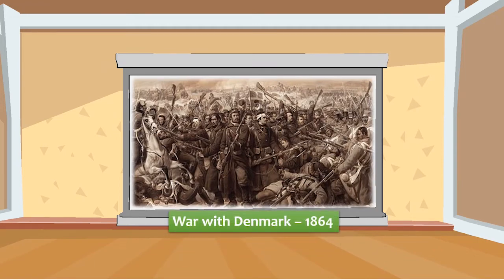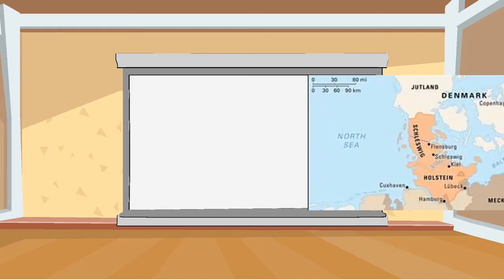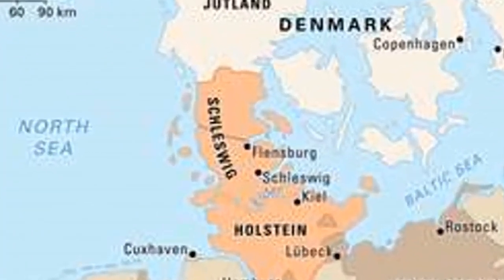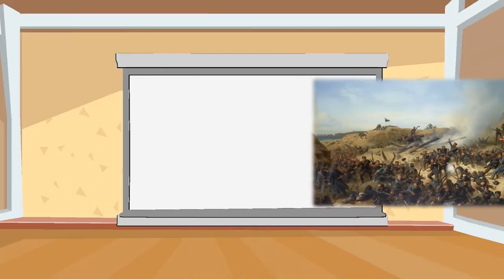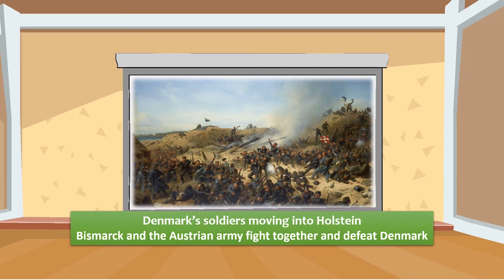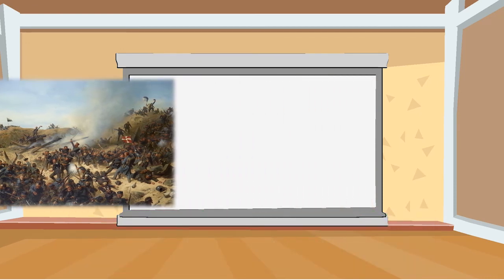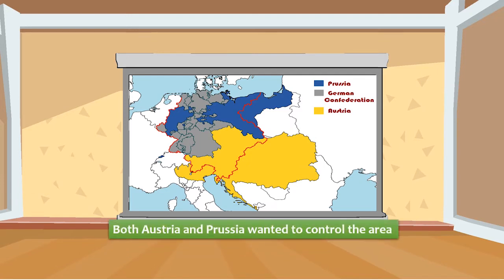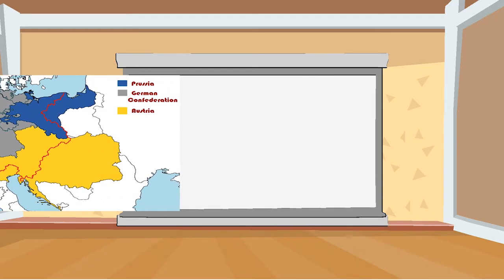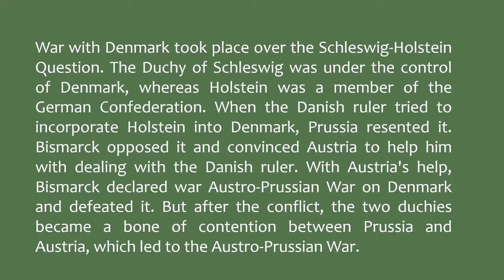Now let's talk about the War with Denmark in 1864. The war took place over the Schleswig-Holstein question. The Duchy of Schleswig was under the control of Denmark, whereas Holstein was a member of the German Confederation. When the Danish ruler tried to incorporate Holstein into Denmark, Prussia resented it. Bismarck opposed this and convinced Austria to help him deal with the Danish ruler. With Austria's help, Bismarck declared war on Denmark and defeated it, but afterward the two duchies became a source of contention between Prussia and Austria, which in turn led to the Austro-Prussian War.